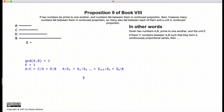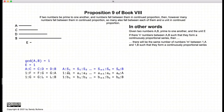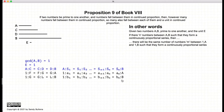So if we have this, then the number of numbers between A and B that form this continuous series — in this case M — there will be the same number of numbers between 1 and A. Between 1 and A, we look for the series of numbers to form a continuous proportion. If there are M numbers between A and B, there will be M numbers between 1 and A, and likewise M numbers between 1 and B.